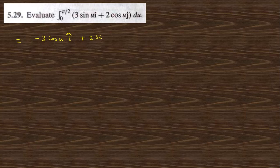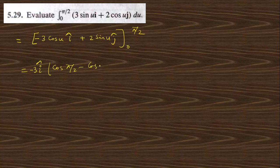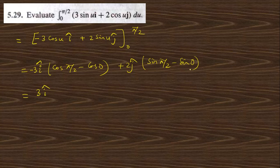Question 5.29: evaluate the given integral from 0 to π/2. Integrating gives −3 cos(u) i cap + 2 sin(u) j cap, evaluated from 0 to π/2. For i cap: −3(cos(π/2) − cos 0) = −3(0 − 1) = 3. For j cap: 2(sin(π/2) − sin 0) = 2(1 − 0) = 2. The answer is 3 i cap + 2 j cap.